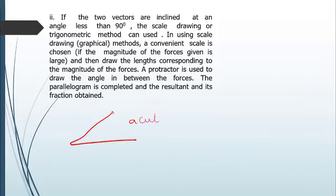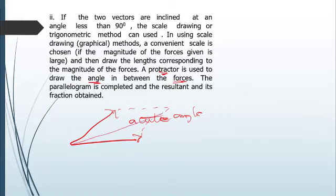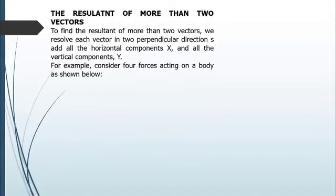If the two vectors are inclined at an angle less than 90 degrees, they form an acute angle. For acute angle vectors, you use scale drawing with a protractor to measure the angle between the forces, then complete the parallelogram. The distance across the parallelogram gives you the resultant and its direction.